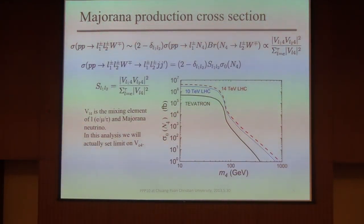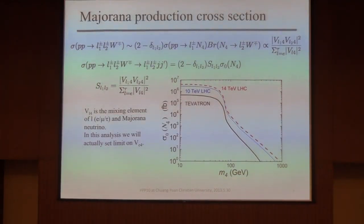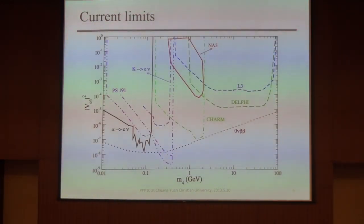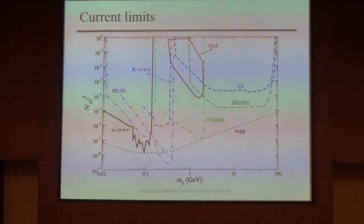In the theory, the cross-section can be divided into two parts: one is the bare cross-section, which is model-independent and only depends on the Majorana mass itself and the center-of-mass energy; another part only depends on the flavor of the lepton. Before us, the LEP experiment was already searching for W decay to lepton and heavy neutrino, setting limits on the mixing parameter between electrons and the heavy neutrino up to about 90 GeV.